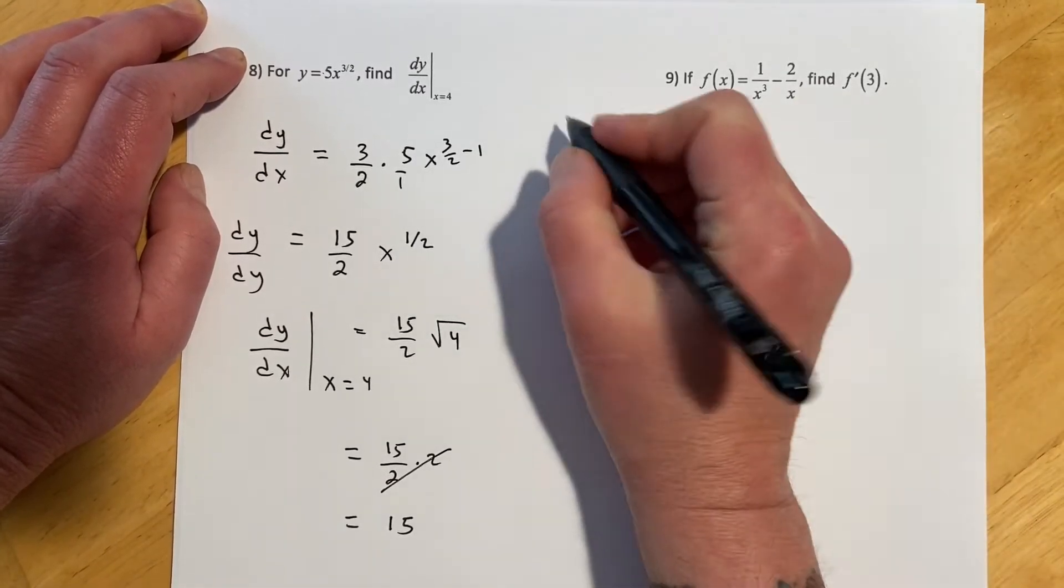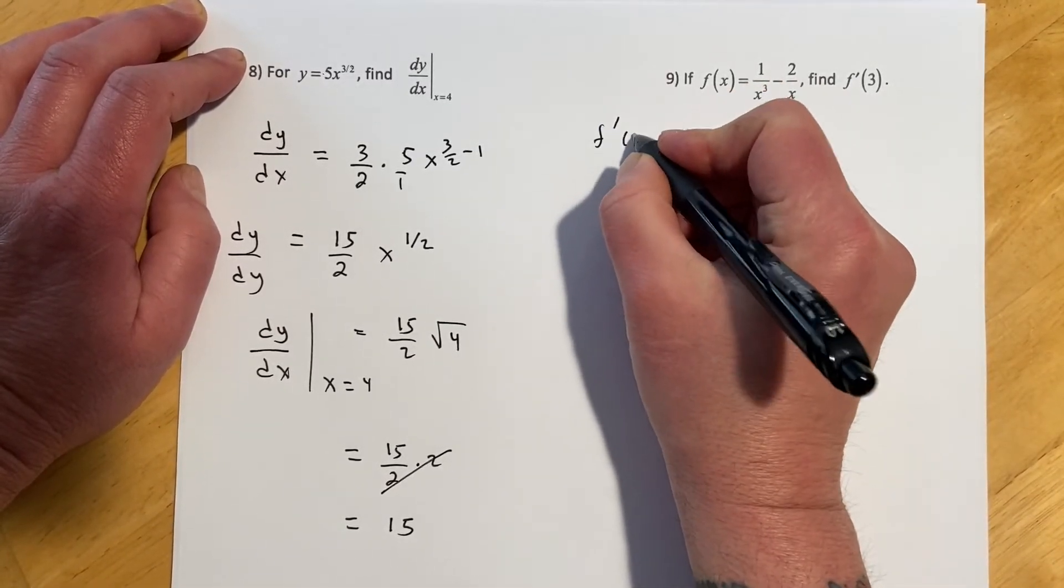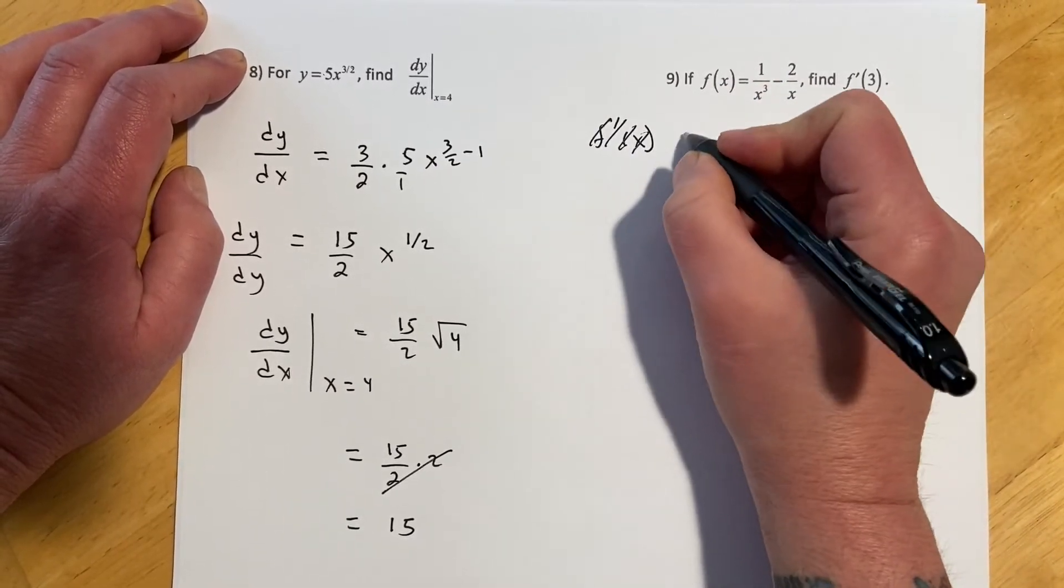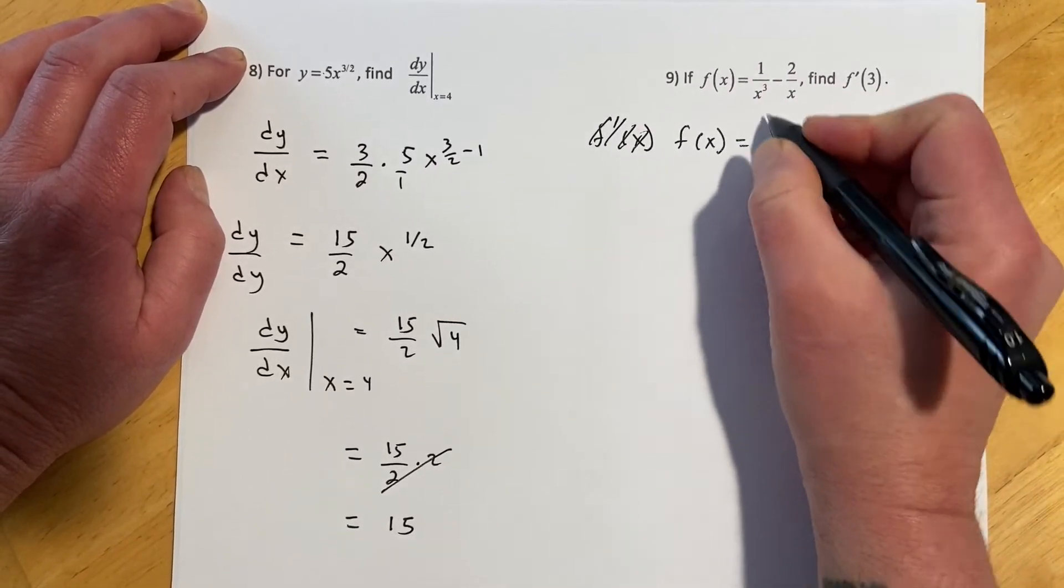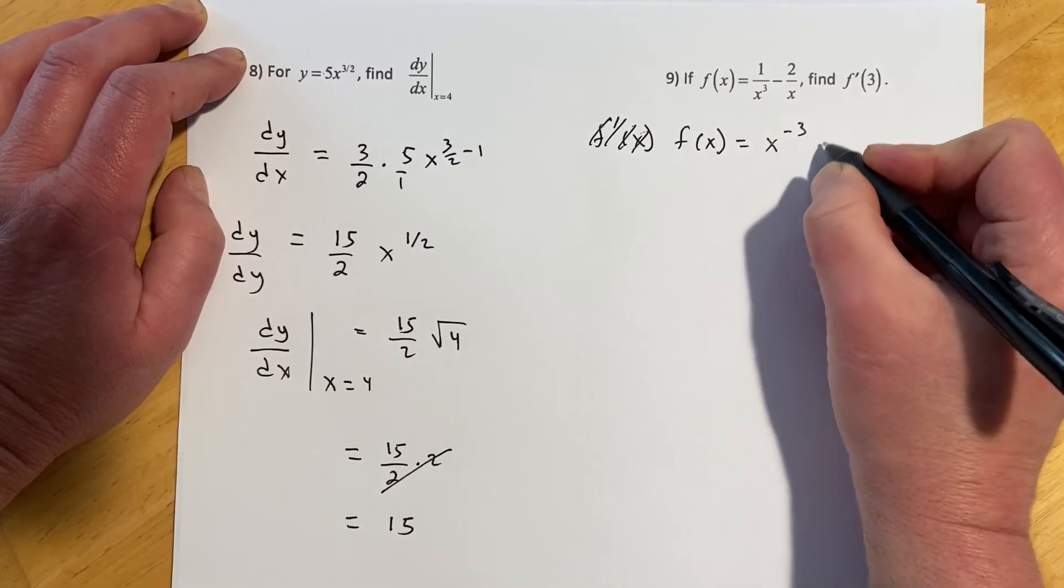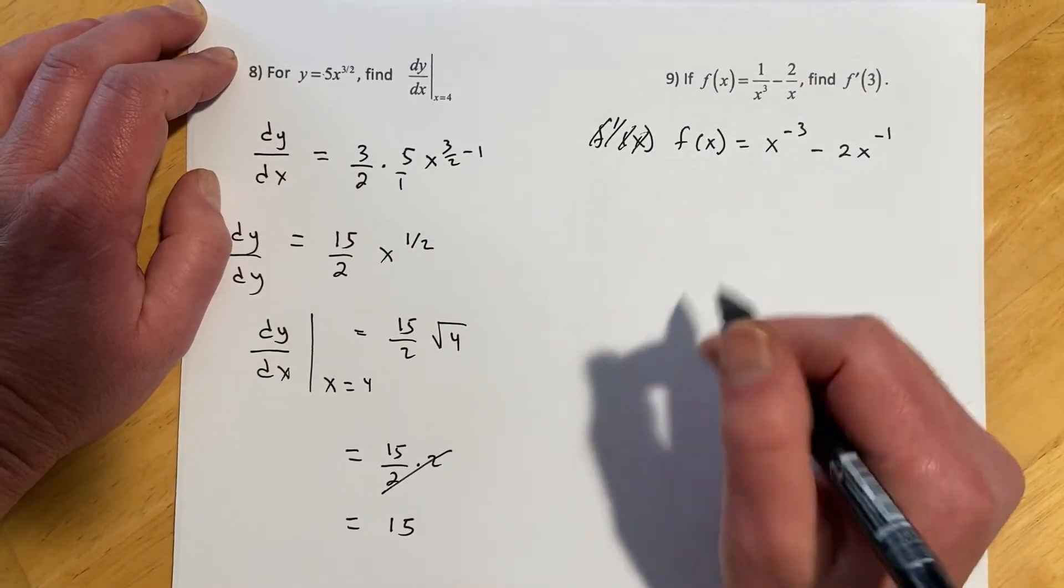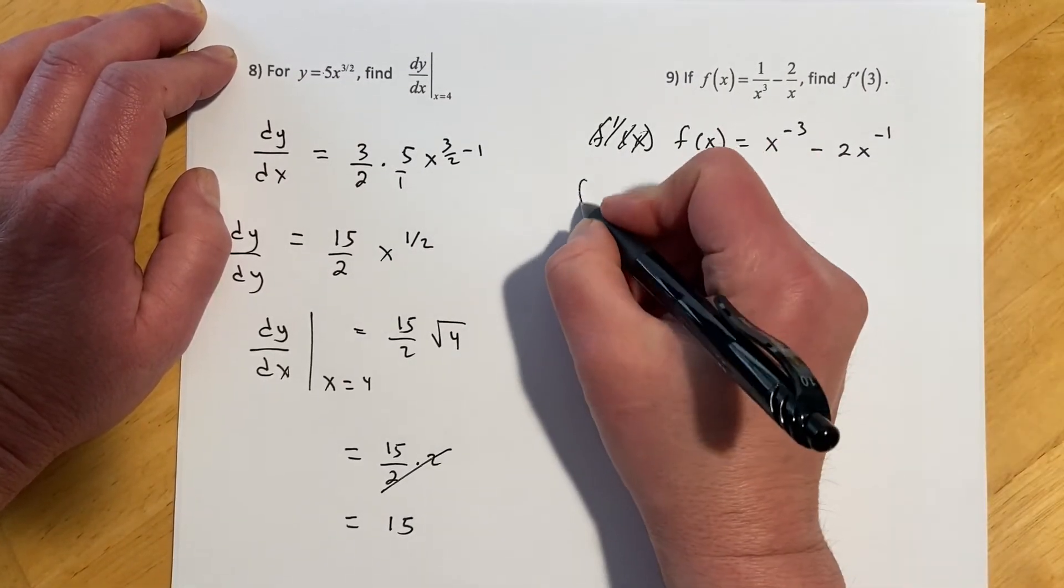Same idea over here, so first thing I've got to do is find f prime of x. Actually no, first thing I'm going to do is rewrite this. So it's still f of x, x to the negative 3 minus 2x to the negative 1. So now that I have that rewritten, I will find my derivative.